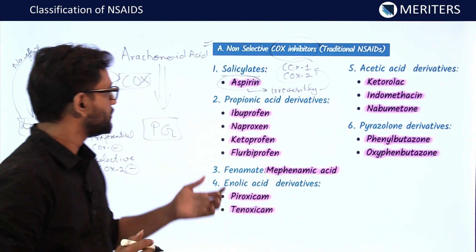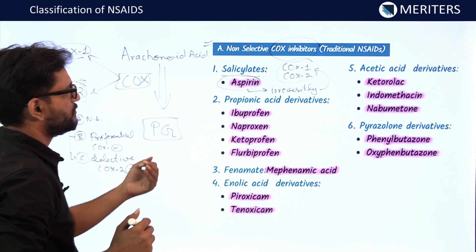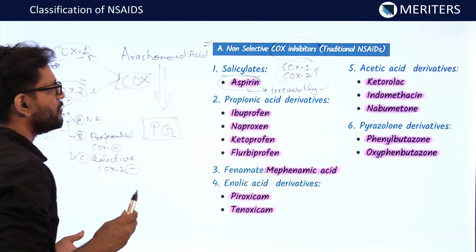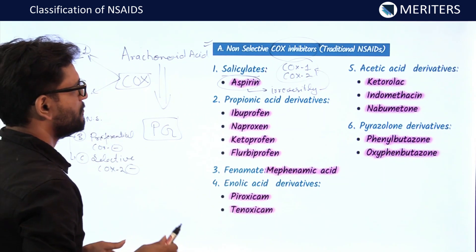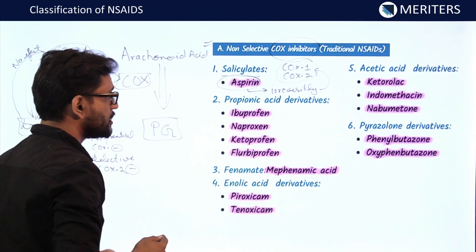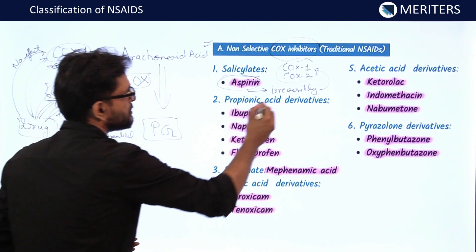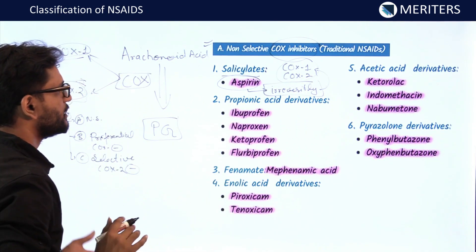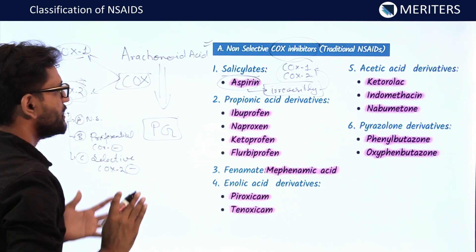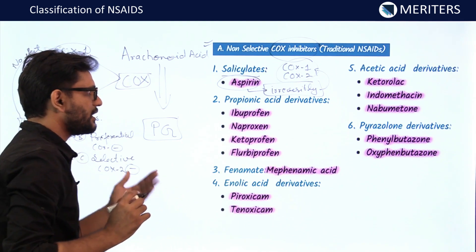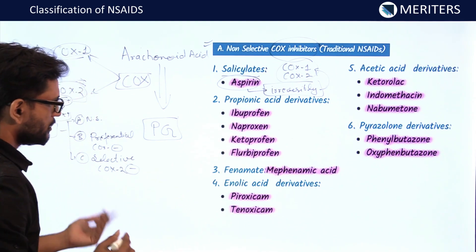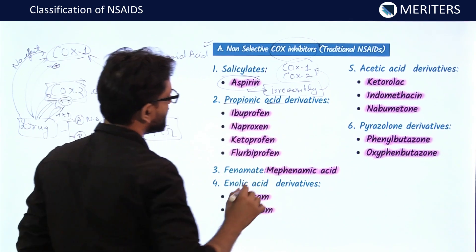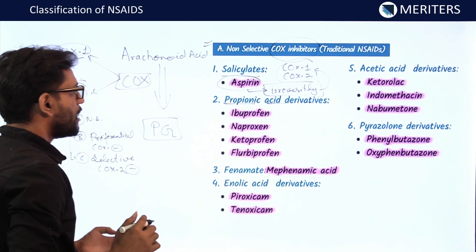Since aspirin irreversibly inhibits COX enzymes, for further prostaglandin formation we require new COX enzymes. New enzyme synthesis is required. This makes aspirin the only non-selective COX inhibitor which inhibits these enzymes irreversibly.